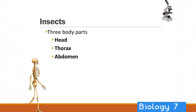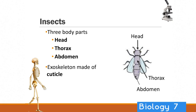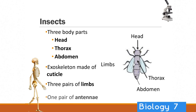Let's break down what an insect actually is. They've got three main parts: a head, a thorax, and an abdomen. The head is the most easily identifiable part, generally where the eyes are. The thorax is the central part of the body, which is generally where the legs are attached. And the abdomen is the posterior or rear part of the insect. All insects have an exoskeleton made out of cuticle. Insects have three pairs of limbs and one pair of antennae.